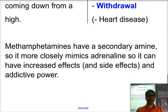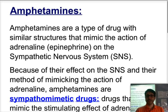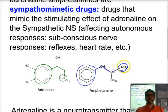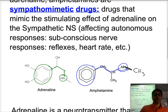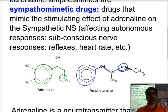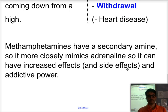Methamphetamines are very similar in structure to amphetamines, only instead of having just an NH₂ there, we have another methyl group connected — just like you would have in adrenaline. Therefore it makes it more like adrenaline, more active, and it has greater addictive power, with more dependence and addiction. Methamphetamines are much closer to adrenaline and significantly more dangerous to the body, which is one of the reasons why they are such controlled substances.